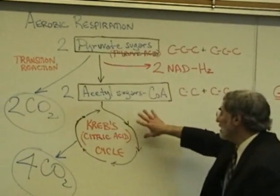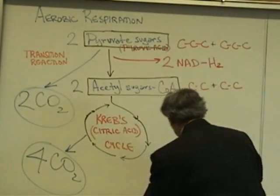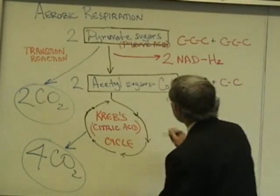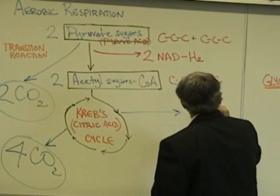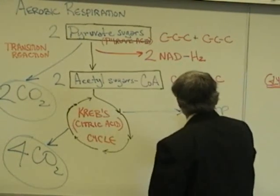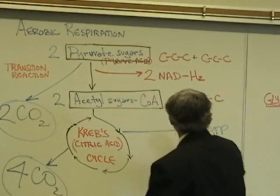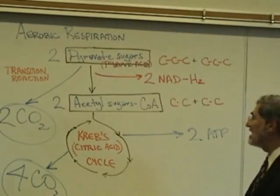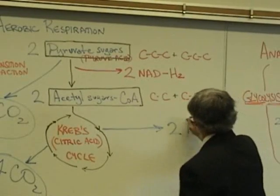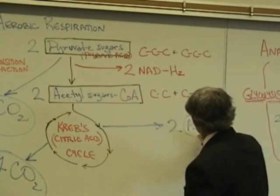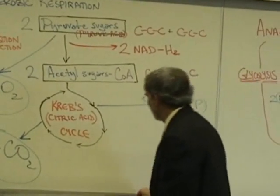A couple of other things occur in the Krebs cycle. First, two ATPs are produced. This occurs in some cells, not in all cells, but in muscle cells — two additional ATPs are generated in the Krebs cycle. That's known as substrate phosphorylation.